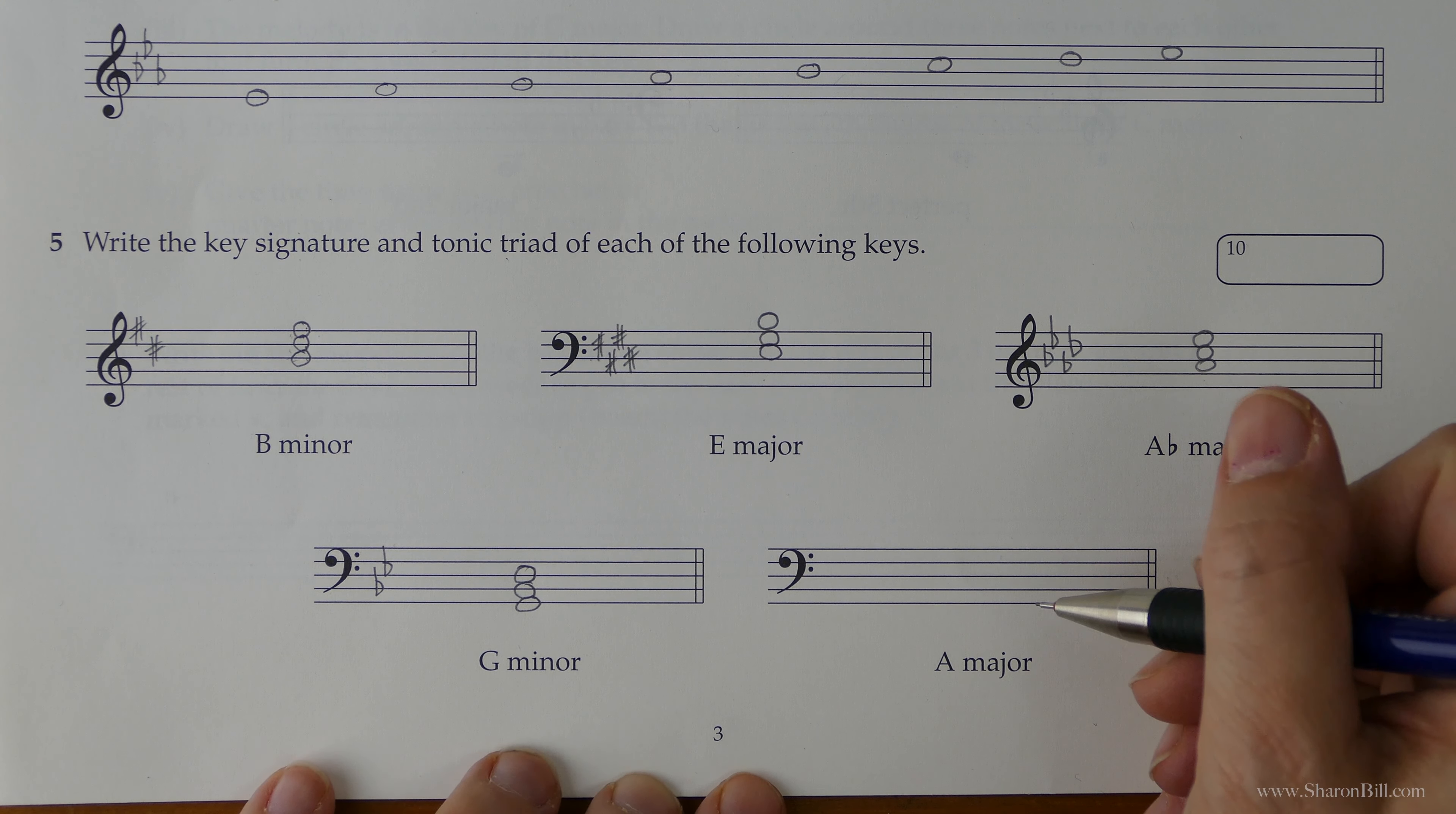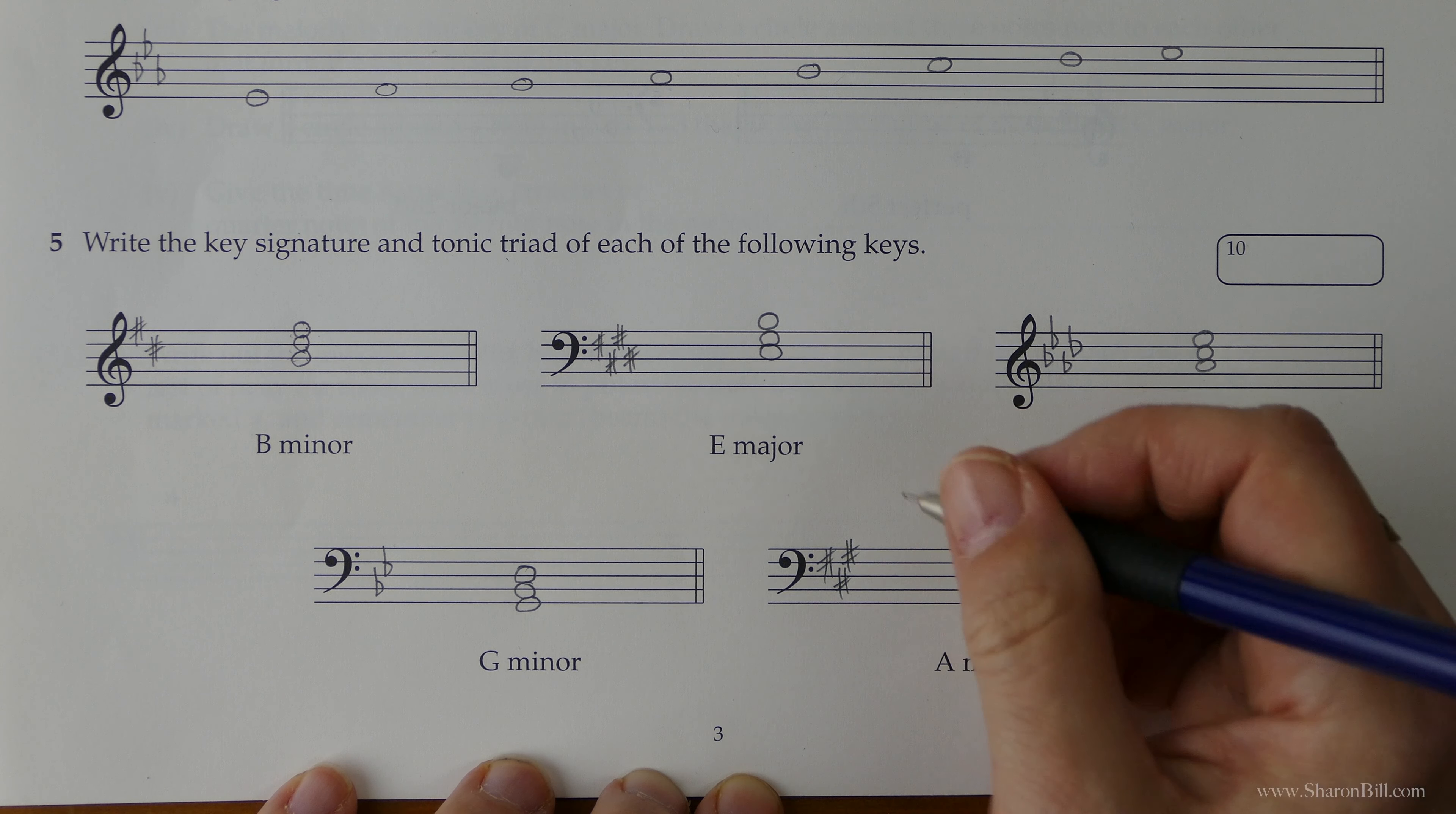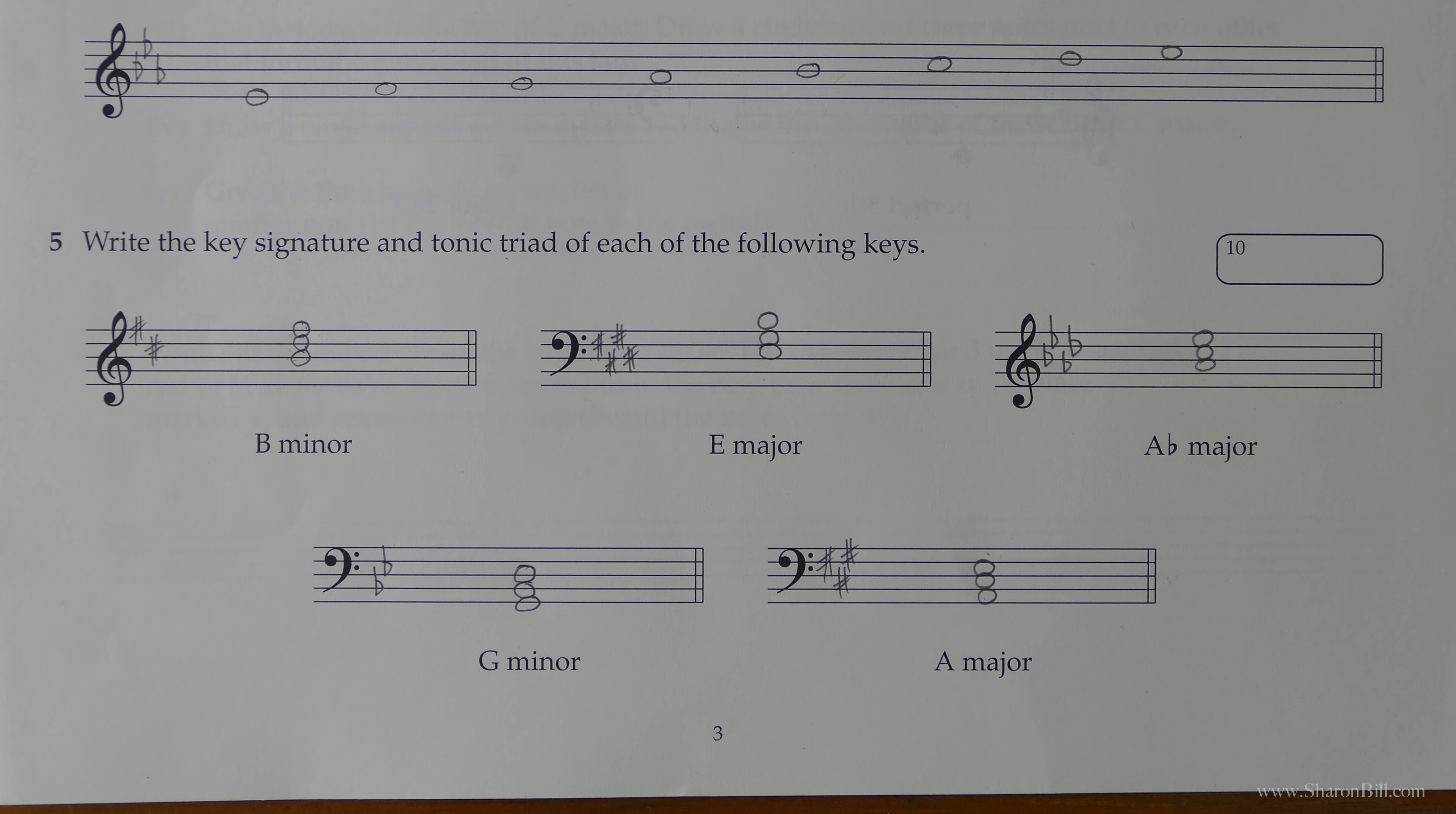A major has a key signature of 3 sharps, F, C, G. There's lots of ways of remembering this. There's something about Father Charles goes down. There's lots of poems. Or Father Christmas, something or other. I was always taught five cats go down an empty barrel. However, whatever it takes to help you to remember that. So F, C, G. And then if you remember the spaces, all cows eat grass. So there's our A. First, third, fifth. And that's that question soon completed. That's the end of that question.